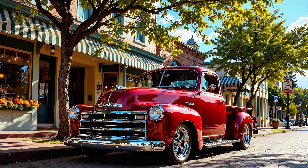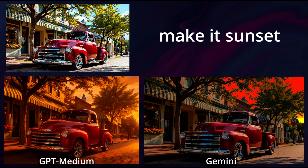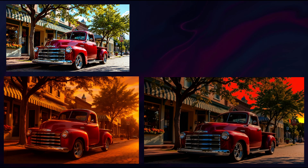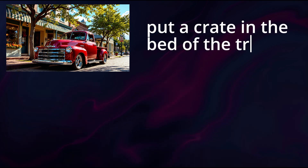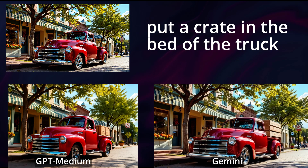I chatted some edits to an image of a classic truck on the street using GPT Medium and Gemini, starting with 'Make it sunset.' GPT Medium changed the aspect ratio and made some minor changes to the truck. Gemini went with kind of a GTA style. Then I said 'Make it winter.' Again, GPT changed the aspect ratio to a square image and faded the truck quite a bit, while Gemini did better at making it winter without changing everything else. Next, I said 'Put a crate in the bed of the truck.' Again, GPT fiddled with more unrelated details than Gemini did.